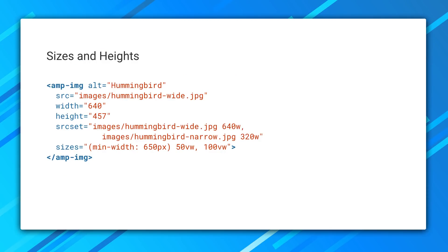Beyond the basics of how to lay out an element, there are a number of advanced features inspired by responsive images. The sizes attribute works similar to its normal HTML counterpart and helps the browser understand how wide the element will be in order to select the right source image. The big twist is that AMP doesn't just tell the browser the element will render at this size — it actually enforces it and applies the new size.